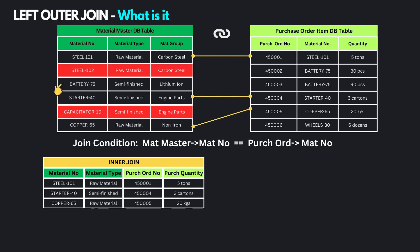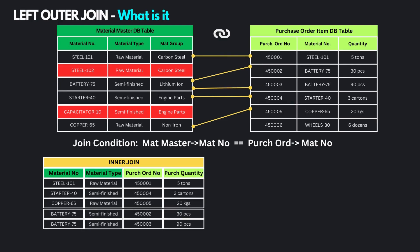The material Battery 75 was ordered twice in purchase orders 450002 and 450003, so we will see two records for this material in the inner join output. This is how the inner join output looks — all the common records from both tables have been fetched, and records that were not common have been ignored.